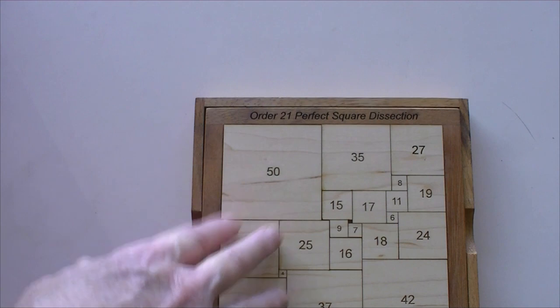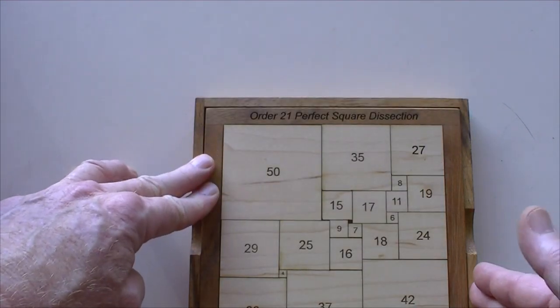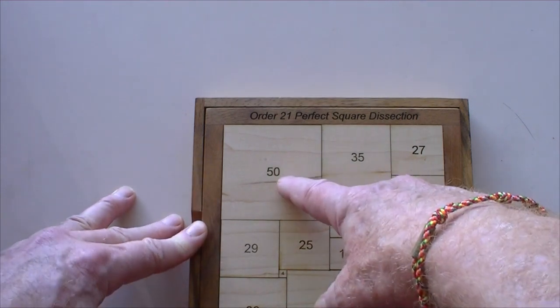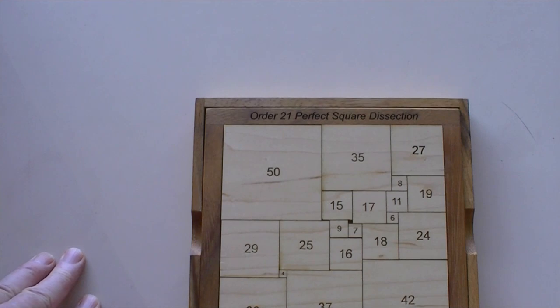The total side length is 112 units. So this is 50 square units, with the total side length being 112. Here's 42, 37, 16, et cetera.